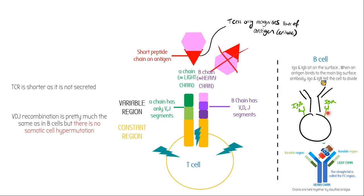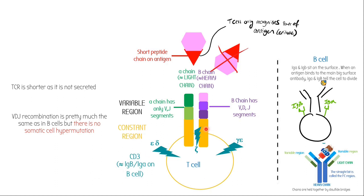Similar to the Ig-alpha and Ig-beta co-stimulatory receptors, you also have co-stimulatory receptors on your T-cells called CD3. They're a group of proteins with Greek letter names, and they double-check that when an epitope has bound to your T-cell receptor, they give the T-cell the go-ahead that everything's all good. They're made of three individual components: epsilon-delta, zeta, and gamma-epsilon. These form a cluster of proteins called CD3 that sit on the surface of the T-cell receptor and confirm that something is bound into it and the T-cell is good to go.